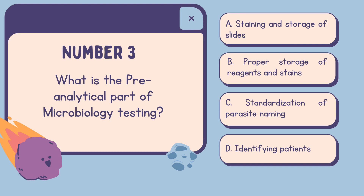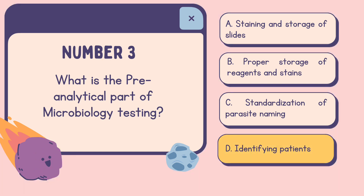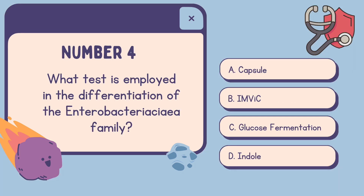Number three: What is the pre-analytical part of microbiology testing? A. Staining and storage of slides. B. Proper storage of reagents and stains. C. Standardization of parasite naming. Or D. Identifying patients. The correct answer is D. Identifying patients.